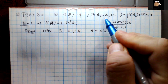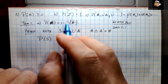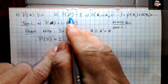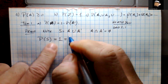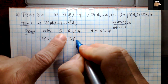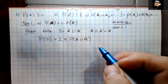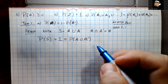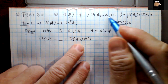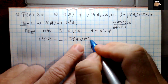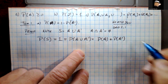We can simply state that the probability of the set S — using property B — is equal to one, since the entire set is certain to occur. But that also equals the probability of S, and S equals A union A-complement. Since A and A-complement are both disjoint and exhaustive, we can use property C to write this as P(A) plus P(A-complement).